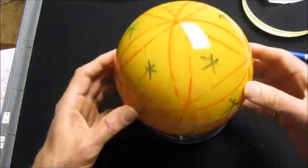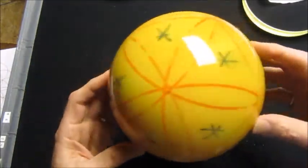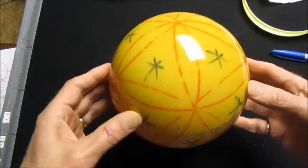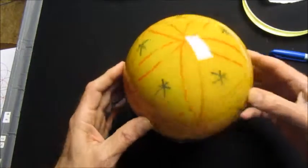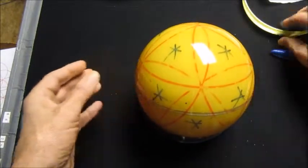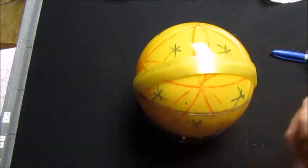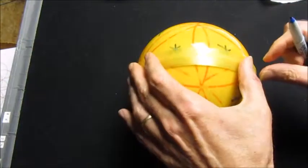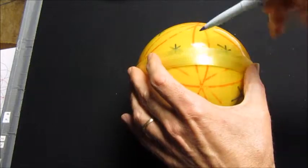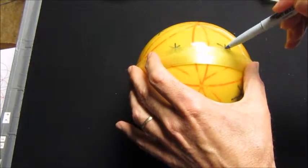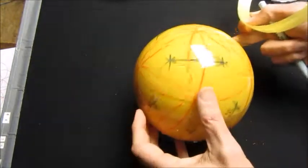All right, so now I have the 20 vertices of the dodecahedron defined here. Now we can start putting straight lines between these points.